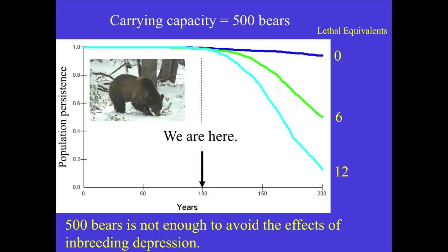The y-axis shows population persistence and the x-axis shows years, with different colors representing different amounts of inbreeding depression. This is over 200 years — and remember, grizzly bear generation intervals are about 10 years, so 200 years is only about 20 generations biologically. With no inbreeding depression, about 95% of populations persist for 200 years. But when we add a reasonable amount of inbreeding depression based on studies with other animals including brown bears — six lethal equivalents — persistence declines. With 12 lethal equivalents, the average from wild population studies, it drops to only about 10%. That's a dramatic decline in probability of persistence.